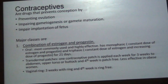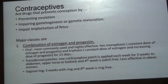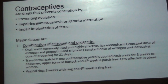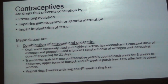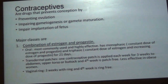The next topic is contraceptives. Contraceptives are drugs that prevent conception by three methods: either preventing ovulation, impairing gametogenesis or gamete maturation, or impairing implantation of the fetus. The major classes include combination of estrogen and progestin, which are available as oral pills, transdermal patches, or vaginal rings. Oral drugs are most commonly used and highly effective. They include monophasic drugs, which have a constant dose of estrogen and progestin, and triphasic drugs, which have a constant dose of estrogen with gradually increasing dose of progestin.